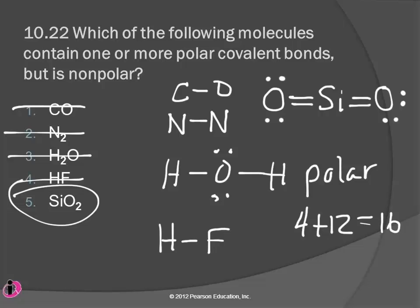Regardless of which method you use - vector addition or Mrs. K's rules of thumb - you still have to consider the shape of the molecule. You figure out the shape by drawing the Lewis structure and applying VSEPR theory. For SiO2, it's linear, so the vectors pointing outward oppose each other equally - net dipole moment of zero.